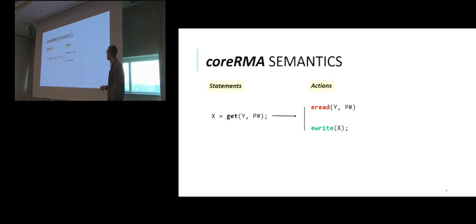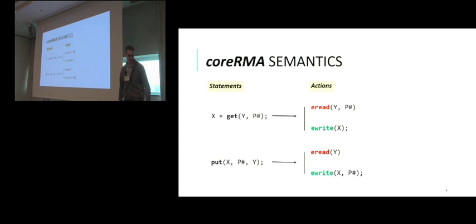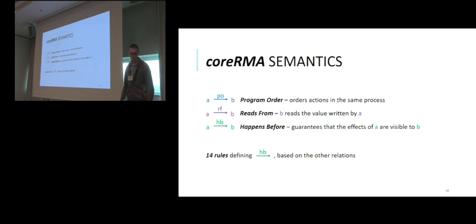The first step is to split each remote statement into its corresponding action. For example, a get statement is split into an eRead from the remote location and then an eWrite action. Similarly, a put statement is split into an eWrite action and a remote eWrite action. Next, we define three relations over this action.